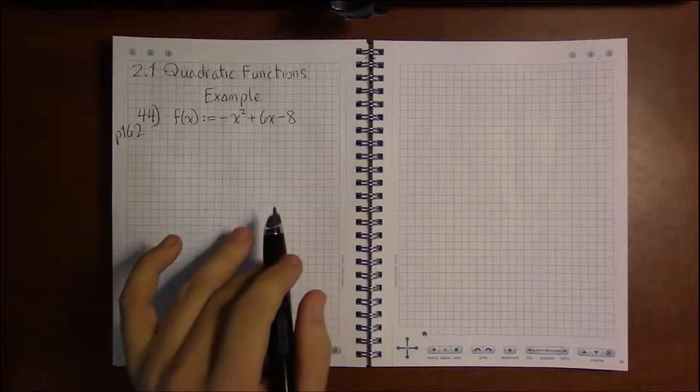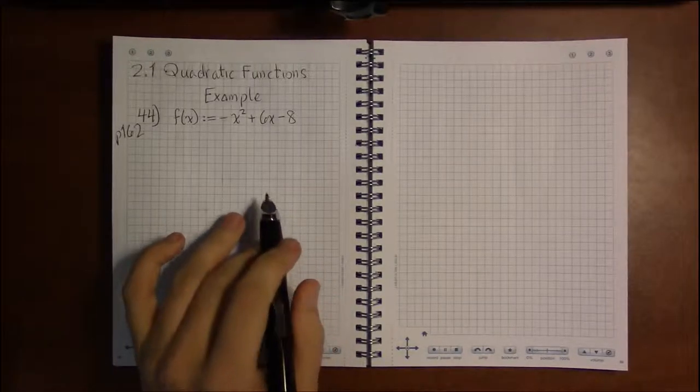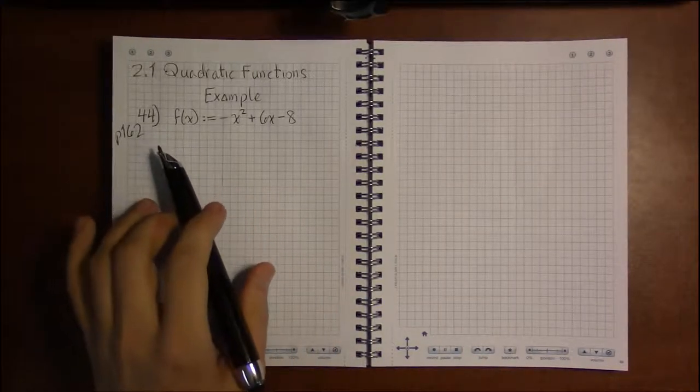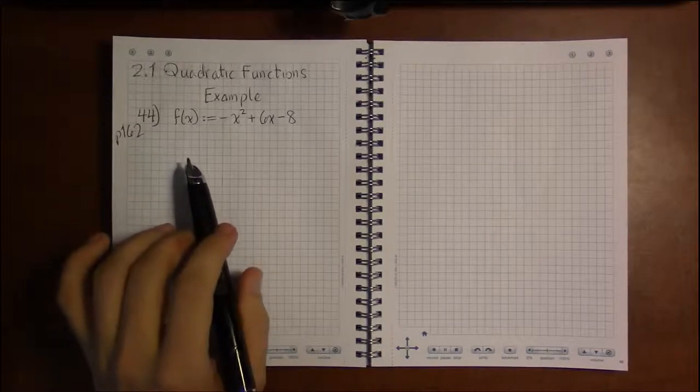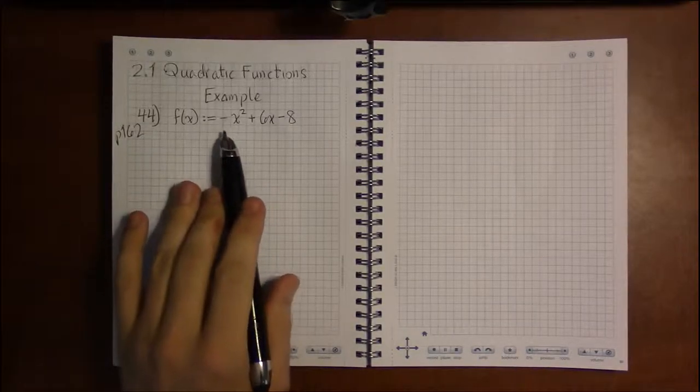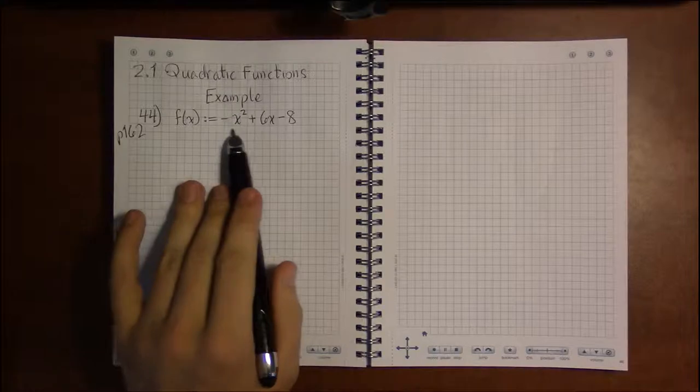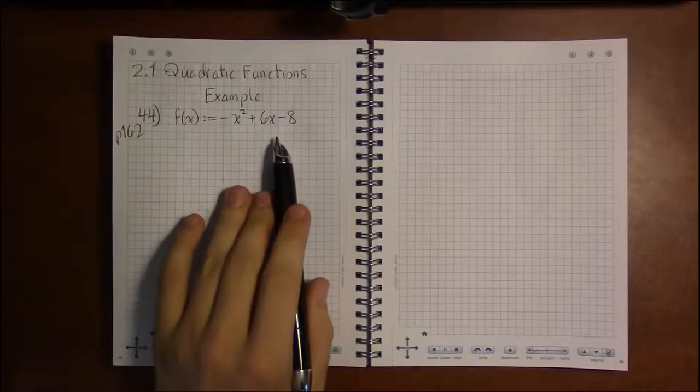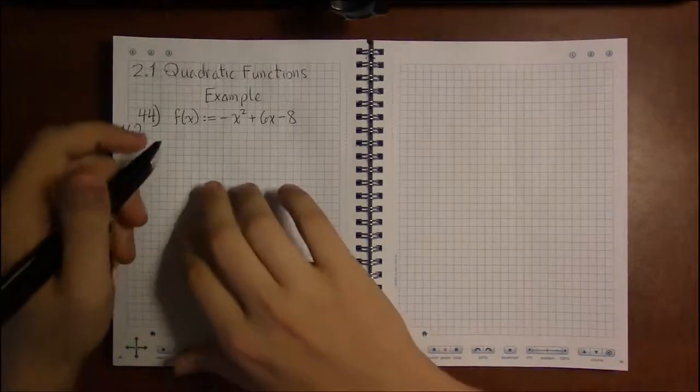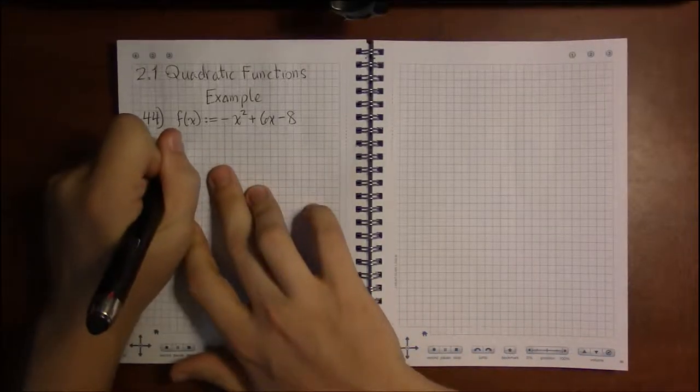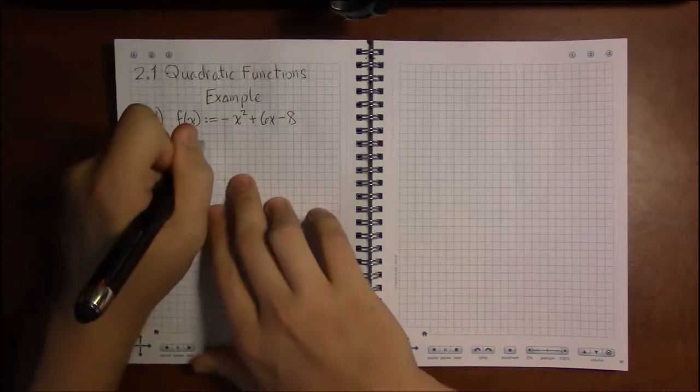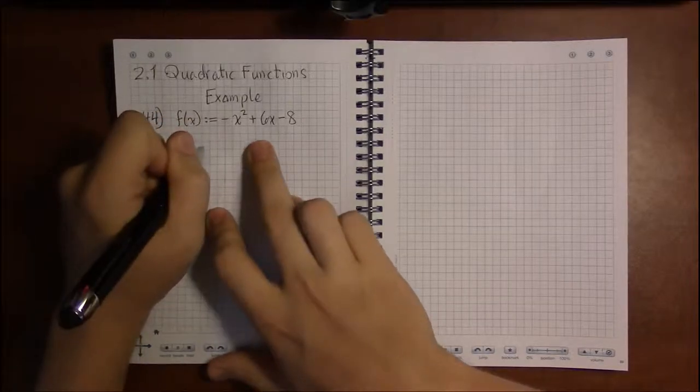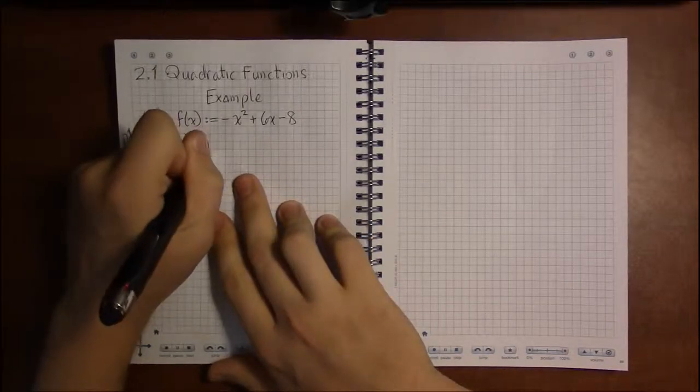Okay, still more examples, although these problems don't have as many parts as the last one. Here we're looking at a quadratic and we're asked to find two things: does the graph have a maximum or a minimum?